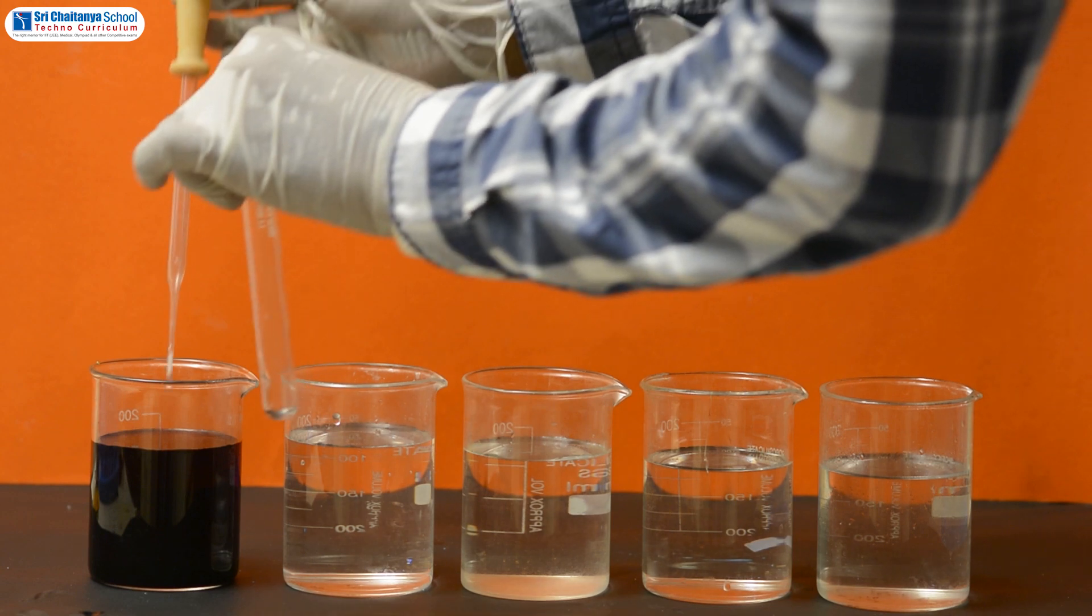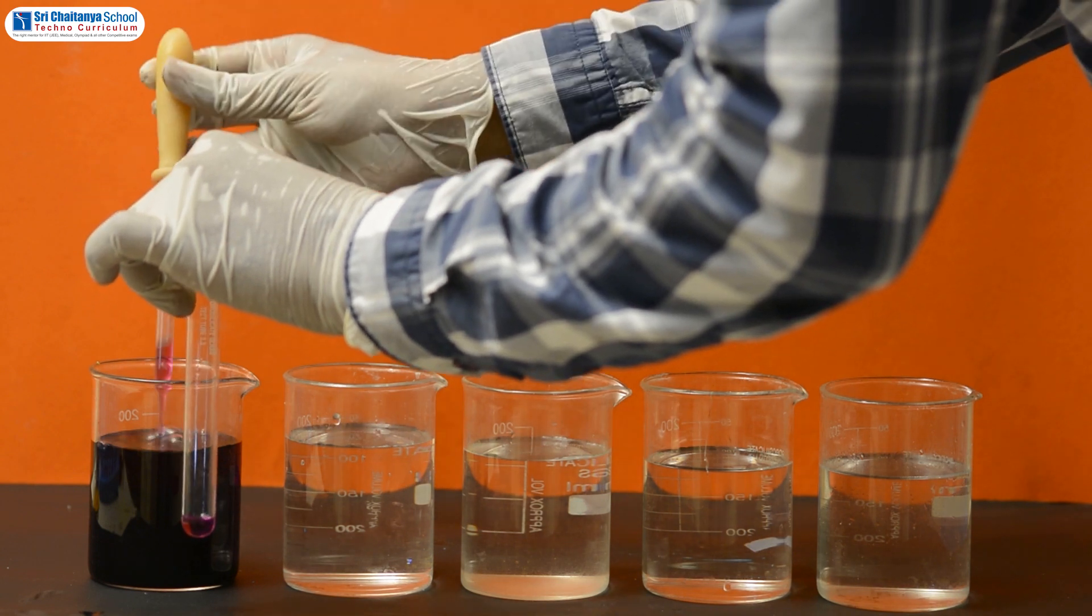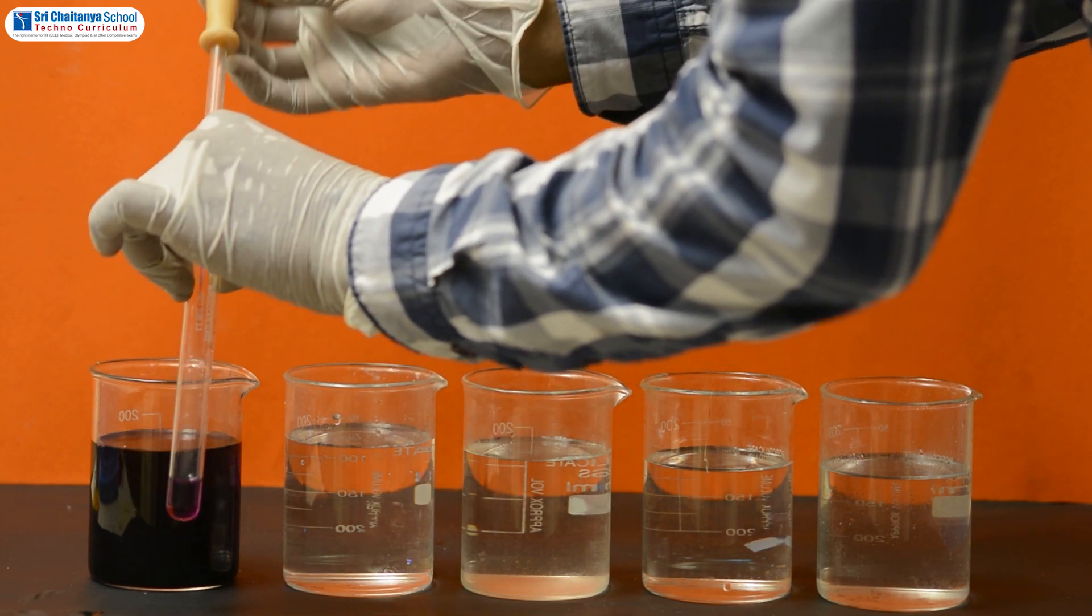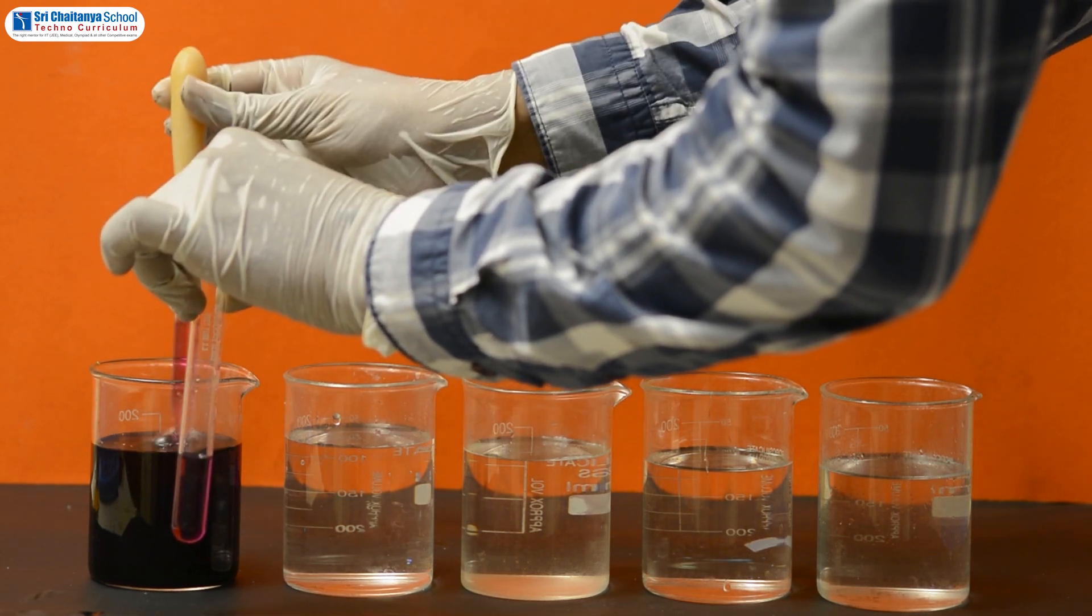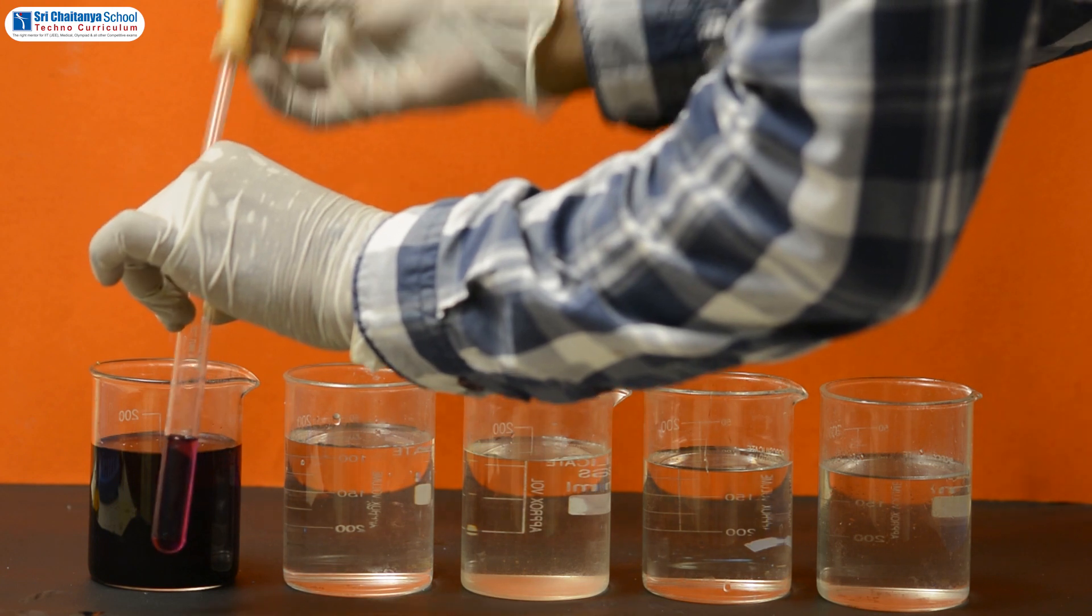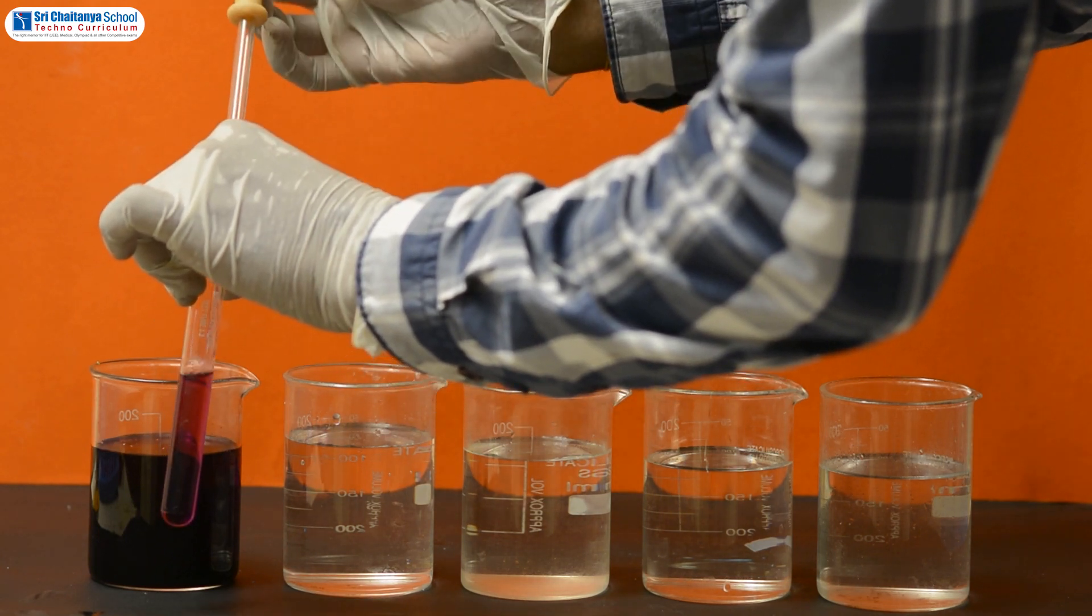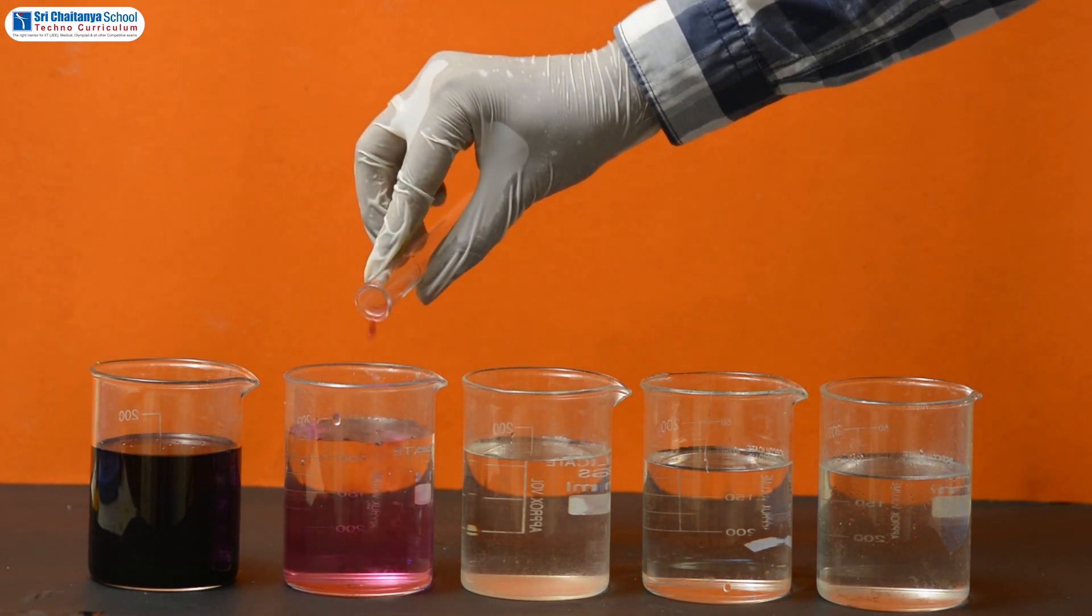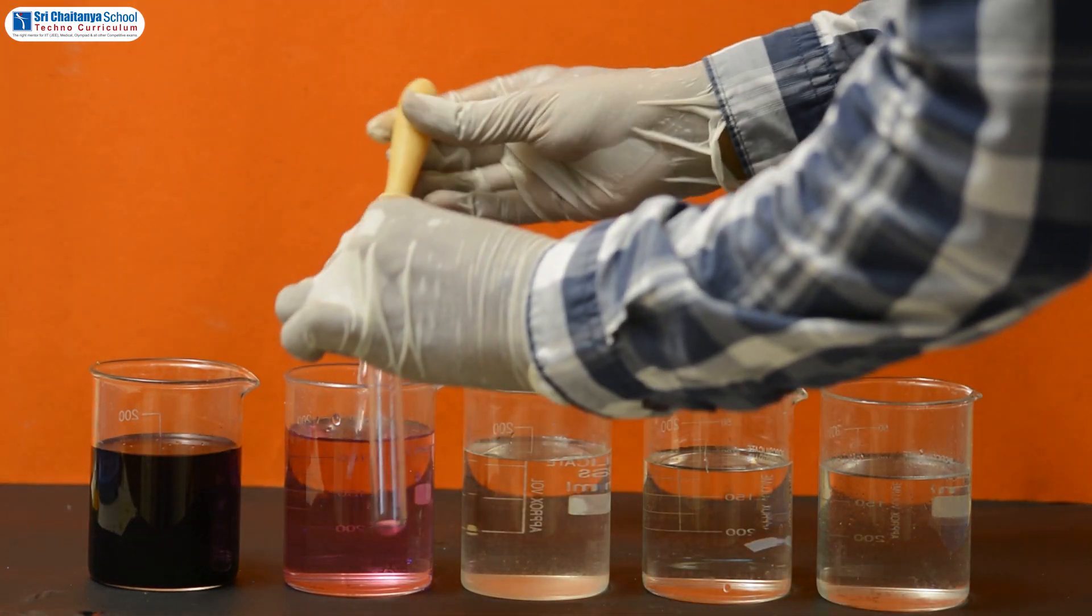Now take out approximately 10 ml of potassium permanganate solution and add to 90 ml of clean water in another beaker. Repeat this process 4 or 5 times.